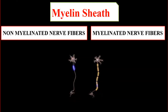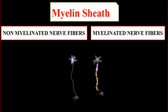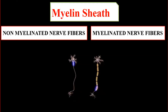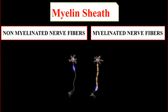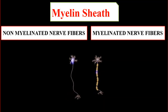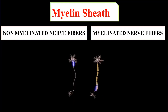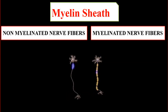The similarities are that both types of nerve fibers classified on the basis of structure or histology — myelinated nerve fibers and non-myelinated nerve fibers — are both nerve fibers and are both involved in the conduction and transmission of nerve impulses.